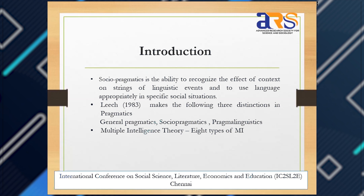For the theoretical framework, I have focused on Geoffrey Leech's distinction on pragmatics and socio-pragmatics — how he divided and focused on socio-pragmatics. Leech divides the field into general pragmatics, socio-pragmatics, and pragmalinguistics. For the multiple intelligence theory, designed by Gardner, there are eight types: linguistic, logical-mathematical, visual, bodily-kinesthetic, musical, interpersonal, intrapersonal, and naturalistic.